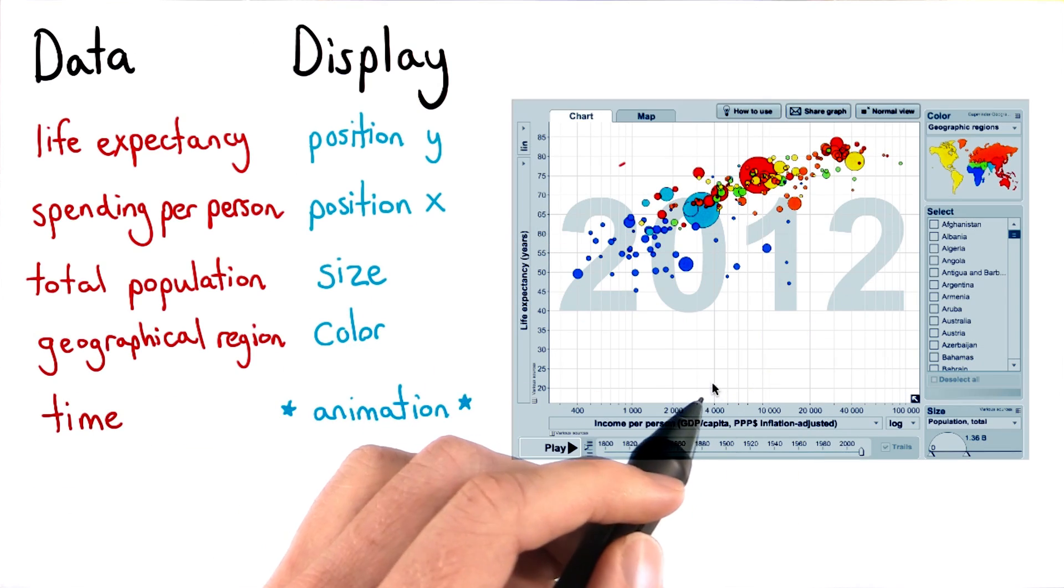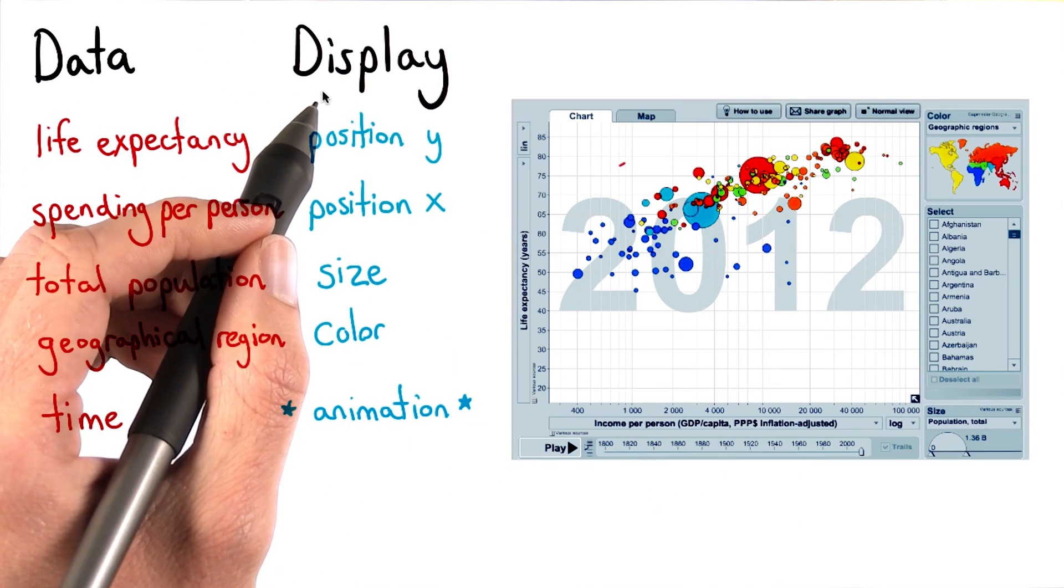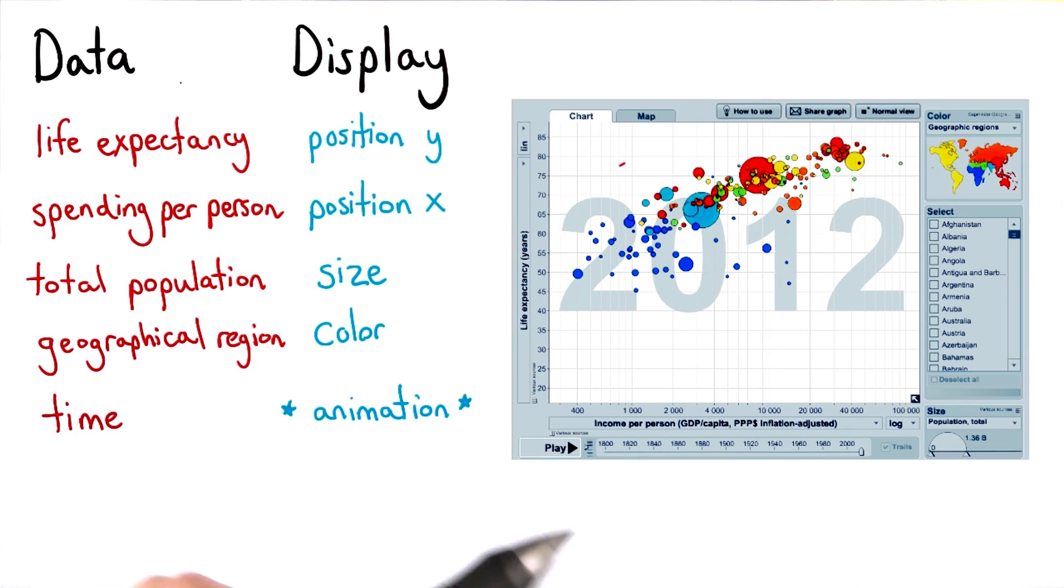Now that you've seen one example of how to map data to display elements, we're going to see if you can do it for two more visualizations.